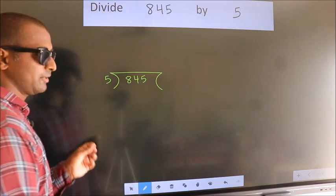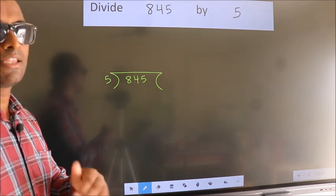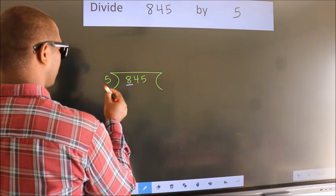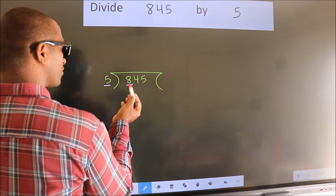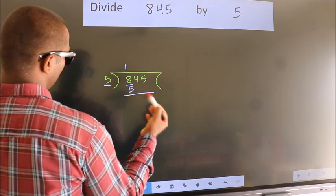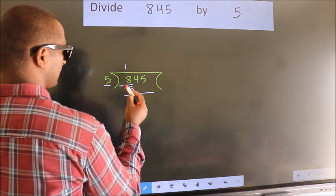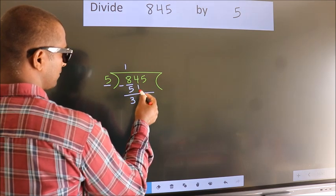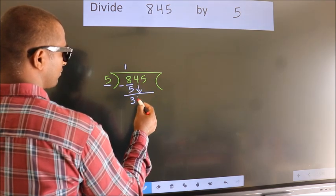This is step 1. We have 8 here. A number close to 8 in the 5 times table is 5 times 1, which equals 5. Now we subtract and get 3. After this, bring down the next number, so bring down 4.